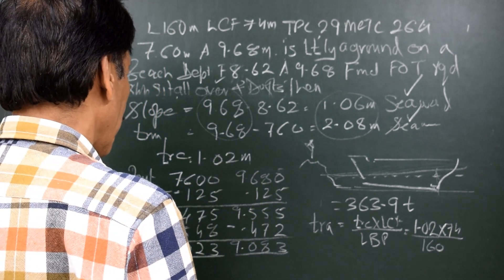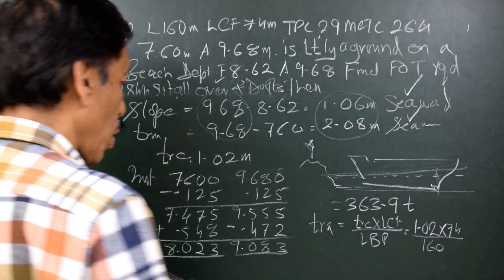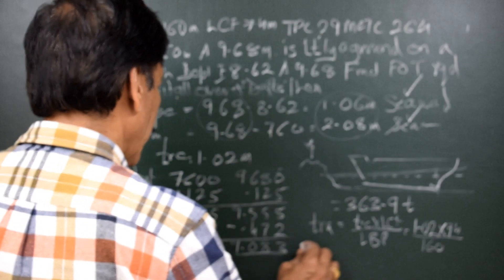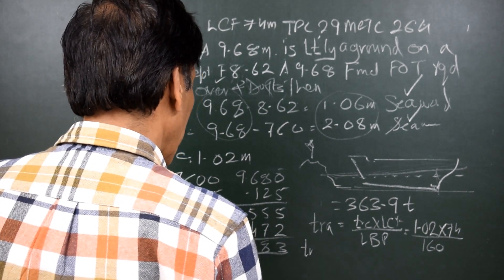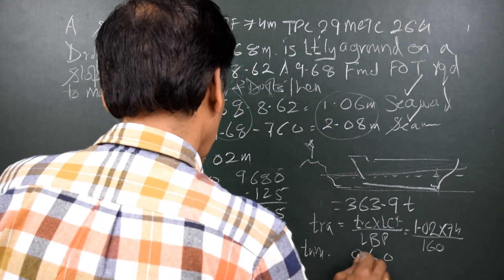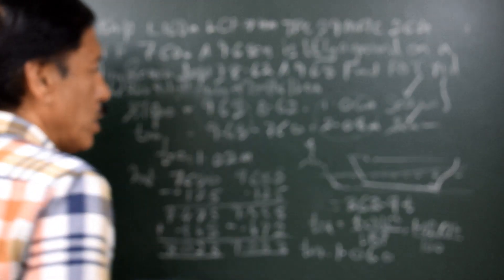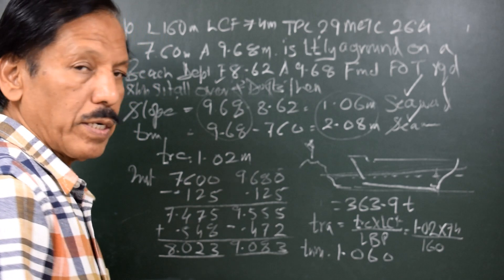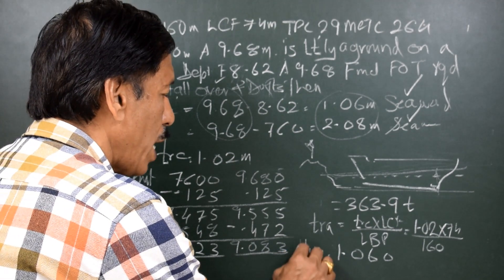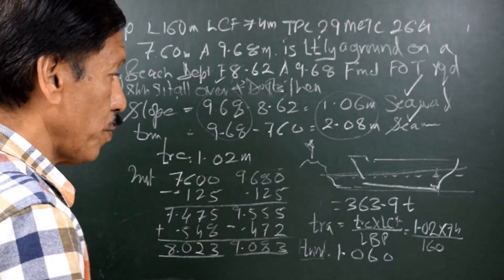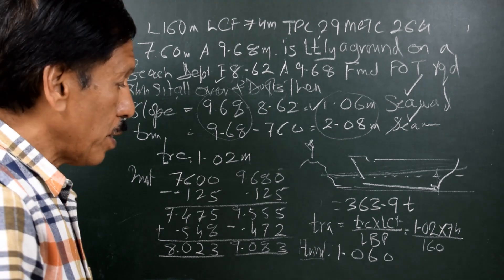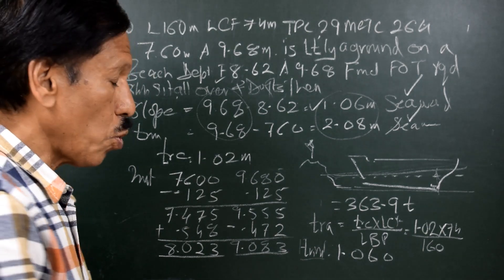So, the trim of the vessel after she sits all over is the difference of the forward and aft draft. The final trim is 1.06 meters. Just an observation and you should make a note: the trim that is acquired by the ship is the slope of the beach actually. Once she sits all over, she has to have the trim which is same as the slope of the beach. Now, the final trim therefore is same as the slope of the beach, 1.06 meters.